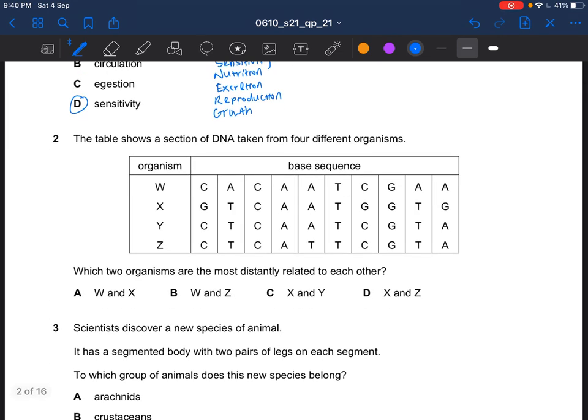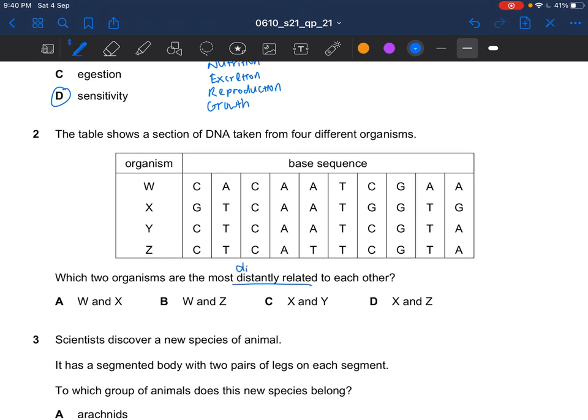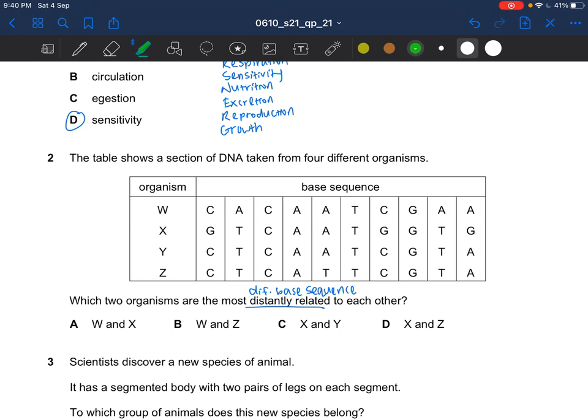Next question, the table shows a section of DNA taken from 4 different organisms. Which 2 organisms are the most distantly related to each other? Distantly related, they would have different base sequence. So we are looking for the one that has the most difference. W and X, this is different. 5. For W and Z, 1, 2, 3. 4X and Y, 3. And 4X and Z, 1, 2, 3, 4. So the one with the most difference is W and X. So the answer is A.